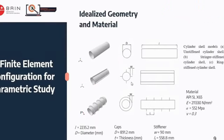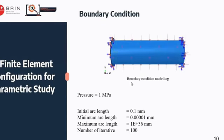Chapter 3 is about finite element configuration for parametric study. In this study, the detail of idealistic geometry and materials are as follows. The boundary condition in this study can be seen as follows.